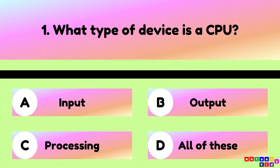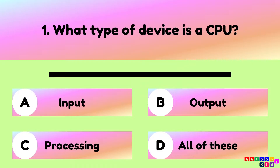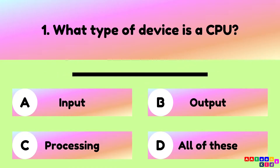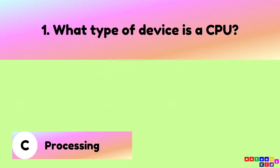What type of device is a CPU? CPU is a processing device.